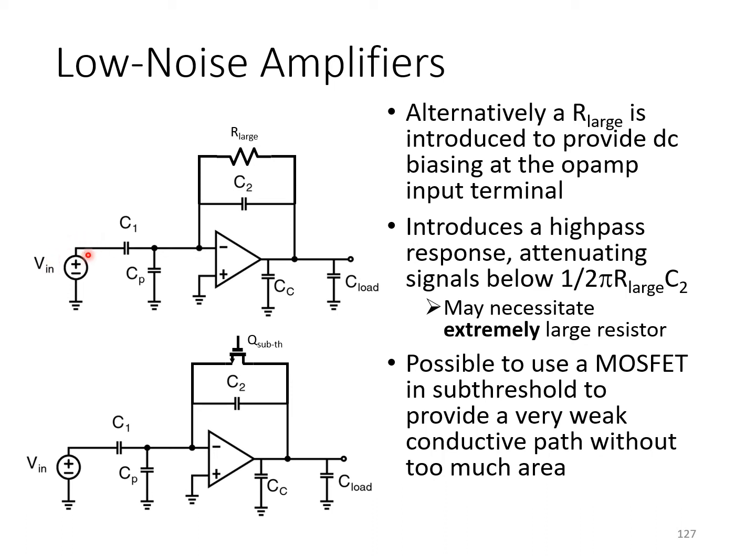However, with respect to the input signal, you'll notice that this R_large introduces a high-pass response to the circuit, which attenuates signals below 1 over 2π R_large times C2. So in order to amplify low-frequency signals, this time constant has to be made very large, which in turn requires a very large value of the resistor here. This can be a bit of a practical problem.